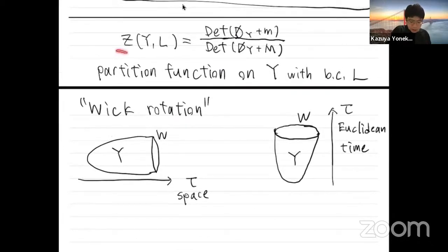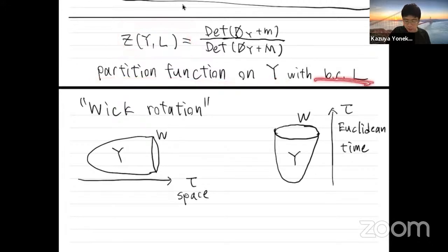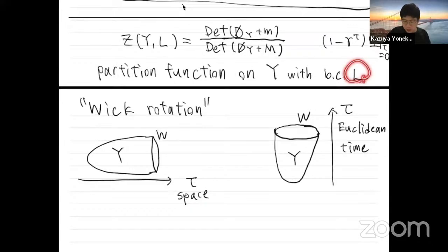I consider this quantity — the partition function on Y with boundary condition L. The boundary condition is given by this condition: tau equals 0 is the boundary, and I impose the condition that psi is an eigenvector with eigenvalue +1 under gamma-tau.